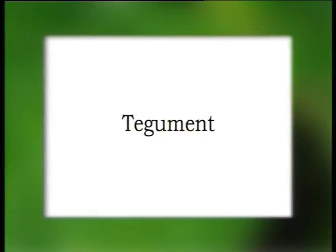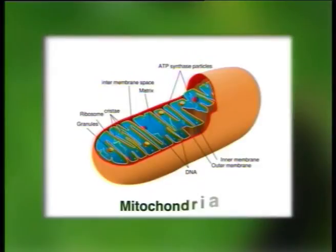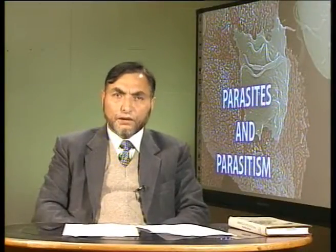Both trematodes and cestodes are covered by a syncytial membrane known as the tegument. There is no epidermis or cuticle in these organisms. This tegument is produced into microtriches, which collect already-digested food material for the organism. Underlying mitochondria help in the active absorption of this digested material, which is then transported into the body through active transport.